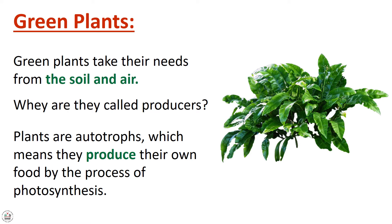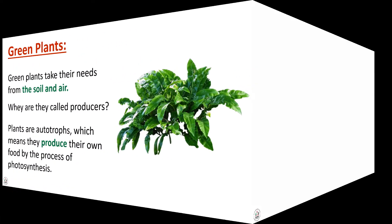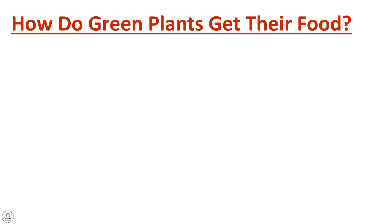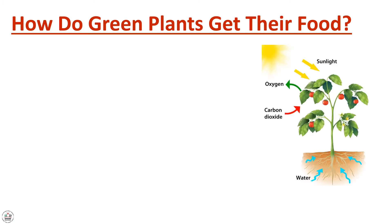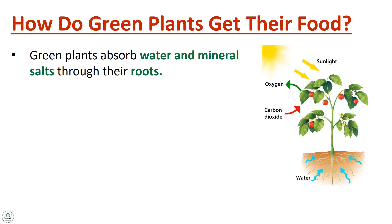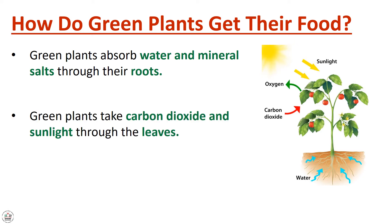How do green plants get their food? Green plants absorb water and mineral salts through their roots. Green plants take carbon dioxide and sunlight through the leaves. As you see in this figure, the green plants absorb water and mineral salts through their roots.